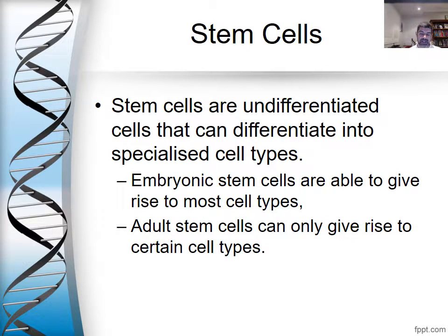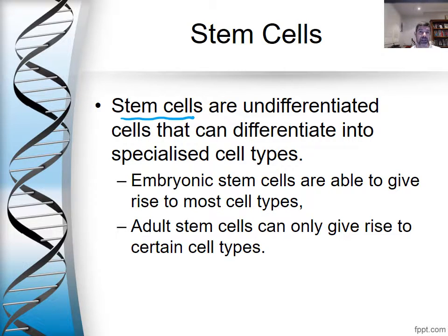Another area being discussed significantly is the use of stem cells. Stem cells are undifferentiated cells. When fertilization occurs and an egg is fertilized by sperm, that produces a zygote — a fertilized egg — which is a diploid cell with the full number of chromosomes. That one cell contains all the information for the individual that will develop, and it divides into two cells, then four, then eight, and so on. At this early stage, the cells have no differentiation — they're not yet going to become muscle cells, blood cells, bone cells, or nerve cells.